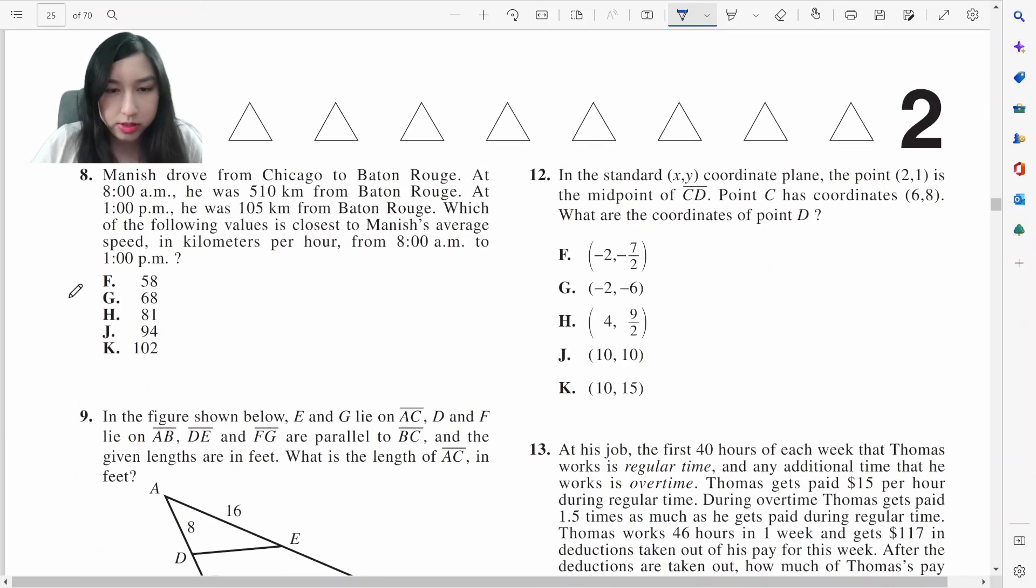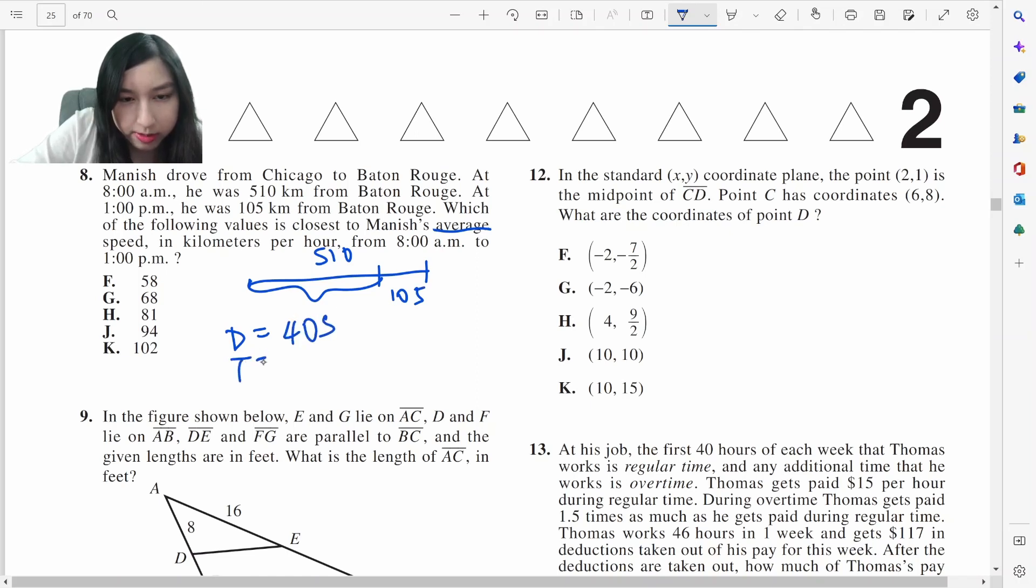Average speed is distance and time. He was at this distance at 5:10 AM and at a different distance at 1:00 PM. So his distance is 405 miles. And the time from 8am to 1pm is 5 hours. So if we divide, we should get 81. H.